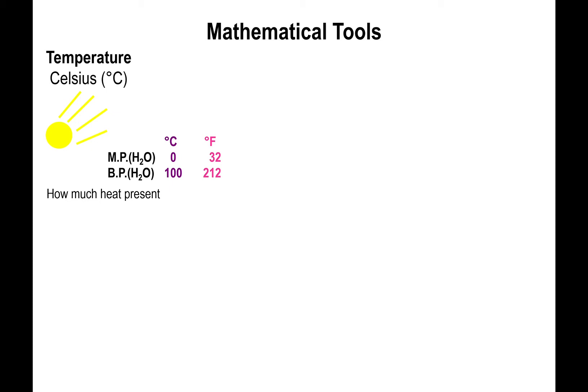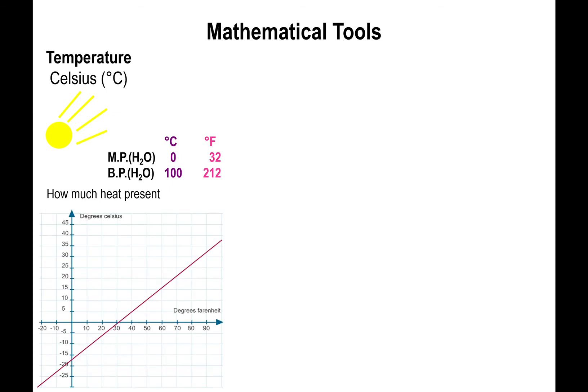So what we can do is graph degrees Celsius and degrees Fahrenheit, and what we're going to find out is that they actually yield a linear equation, a linear equation that by default has to have the following format: y = mx + b. So what that basically means is that if we plot degrees Celsius versus degrees Fahrenheit, we're going to have the following formula where degrees Celsius will be the y value and degrees Fahrenheit will be the x value. We're going to have a slope m and a y-intercept b.